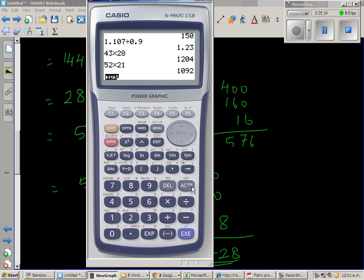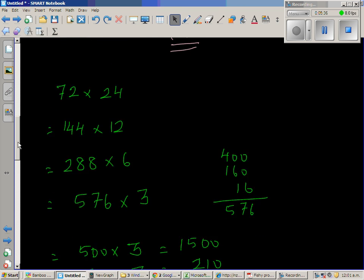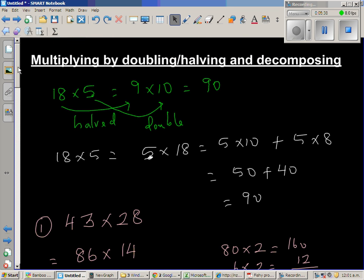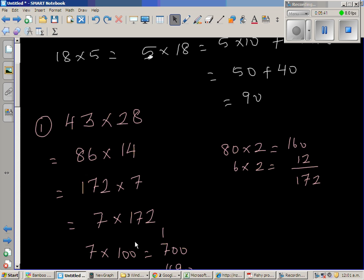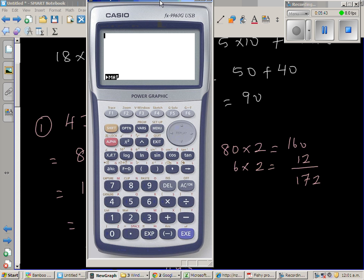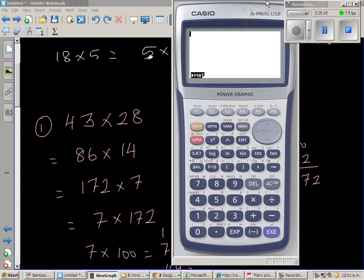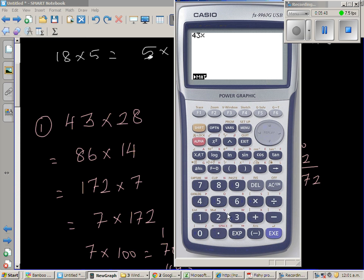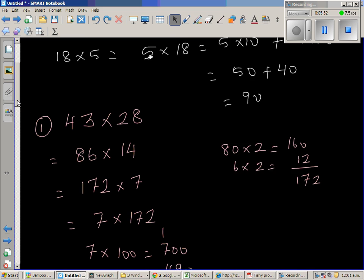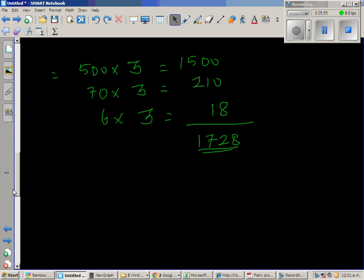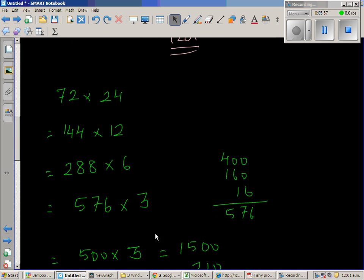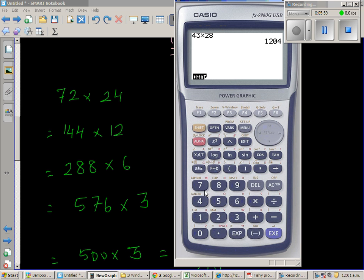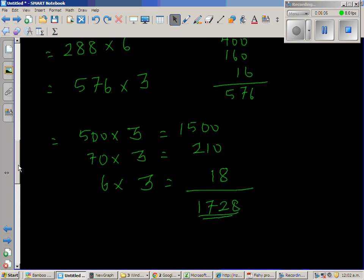So let us use a calculator to check whether we have got it right. The first question was 43 times 28. 43 times 28 is 1204. That was right. And the next question was 72 times 24. 72 times 24 is 1728.